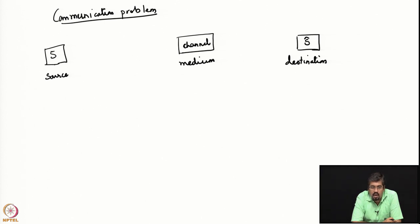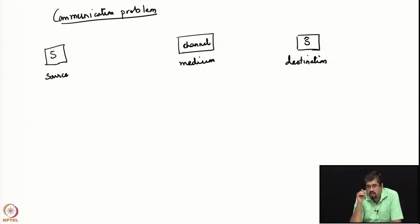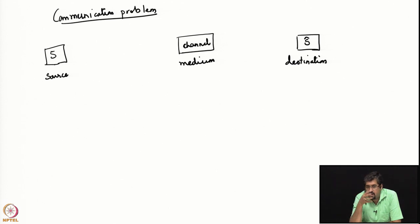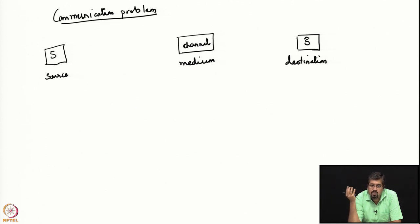You might think: can you really send any source over any medium? For example, the source could be the letters of the alphabet — letters that are pictorially written in a book or on a blackboard. Whereas the medium could be, say, the radio medium. If you want to send these letters over a radio medium, the letters themselves cannot directly go into it. Therefore, what one has to do is to somehow convert these letters into signals that can actually be sent as inputs into this particular medium.